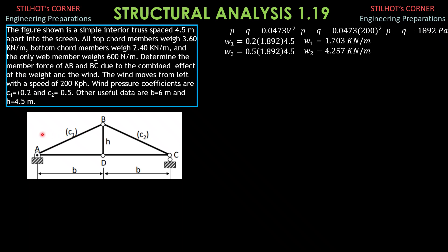We now compute the wind load horizontal. It is 1.703 times the vertical projection H which is 4.5. We transmit half of that load at the ends of the joints because the loadings of a truss are transmitted to the joints, not on the member — that's the definition of a truss. So 1.703 times H (4.5) equals 7.664 kilonewtons. Half at A horizontally and half at B horizontally: 7.664 divided by 2 equals 3.832 kilonewtons each. For the vertical component of wind force, which is downward because C1 is positive 0.2, it equals 1.703 times the horizontal projection of 6, then divide by 2, transmitted at A and B vertically.